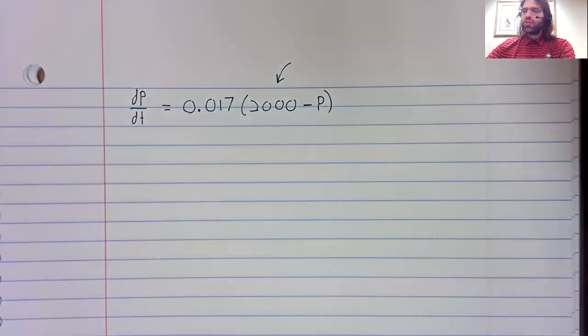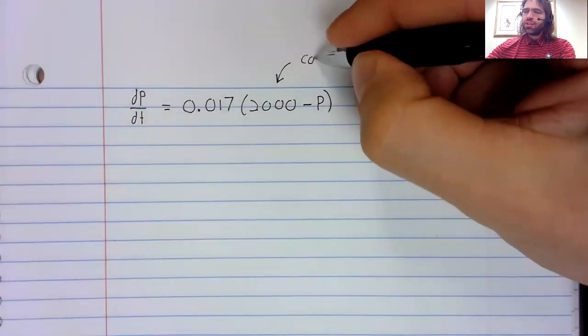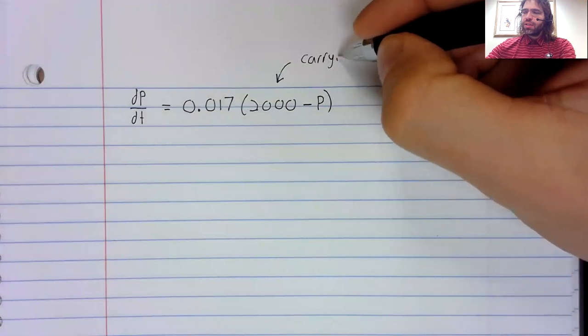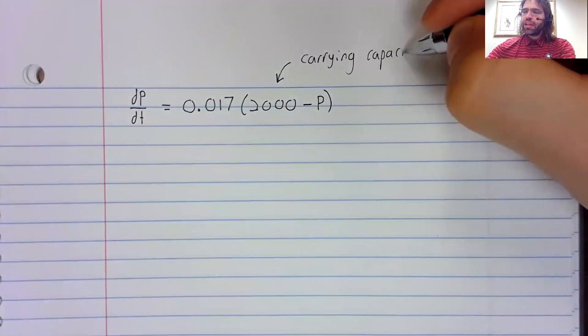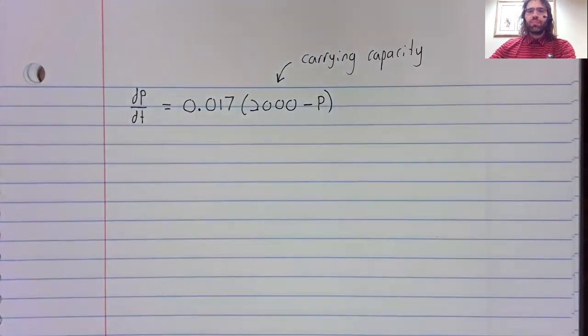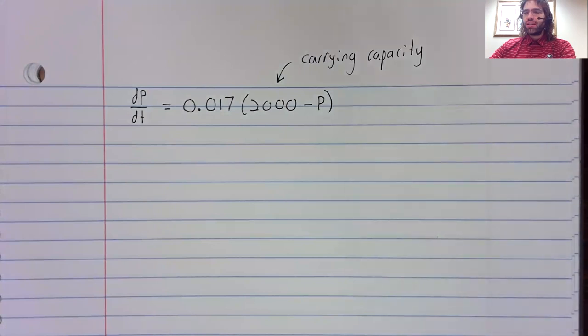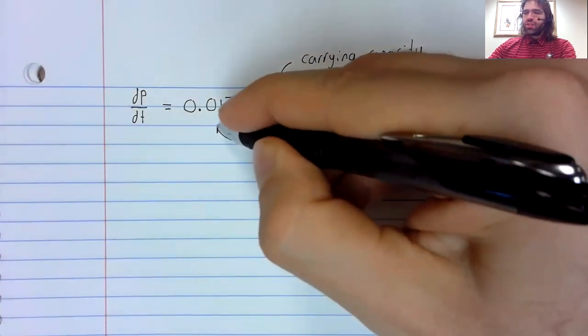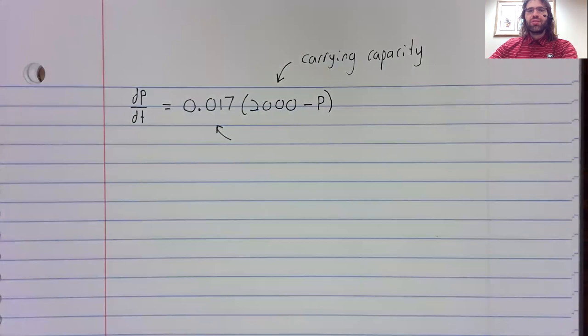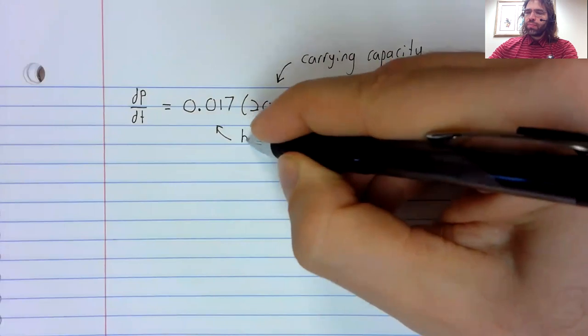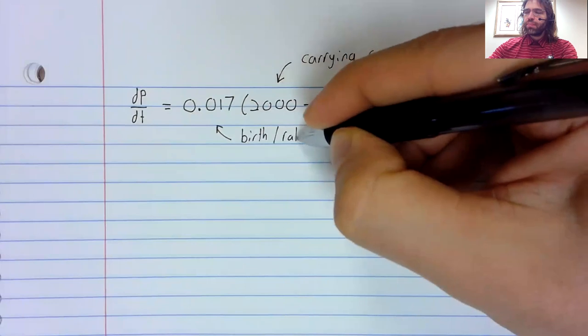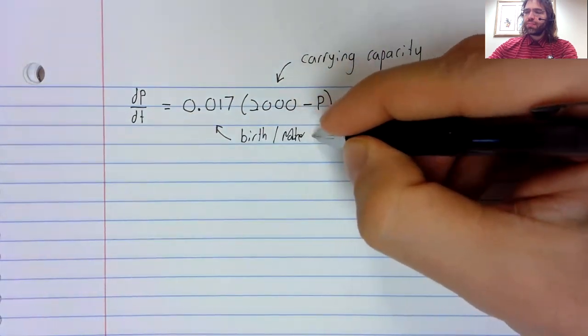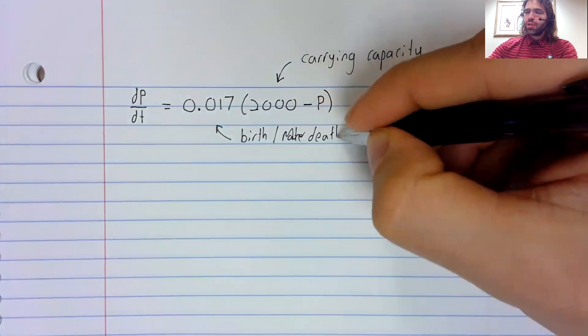Well, this 2000 is what we think the carrying capacity of the population is, and this 0.017 is a parameter incorporating things like birth and death rates.